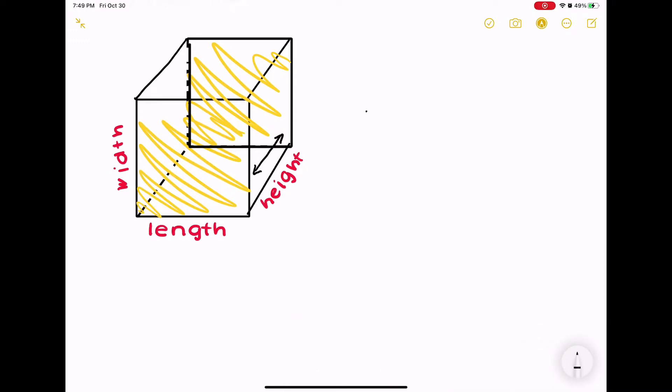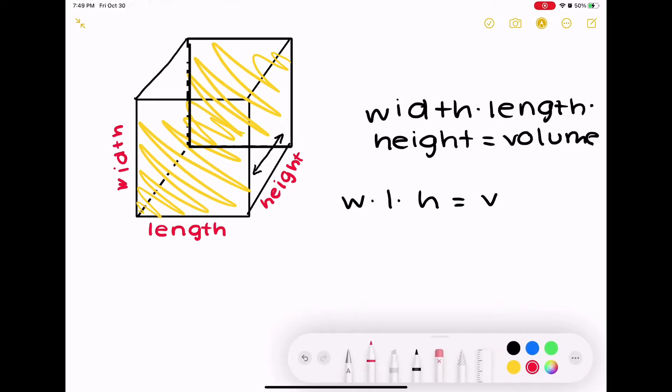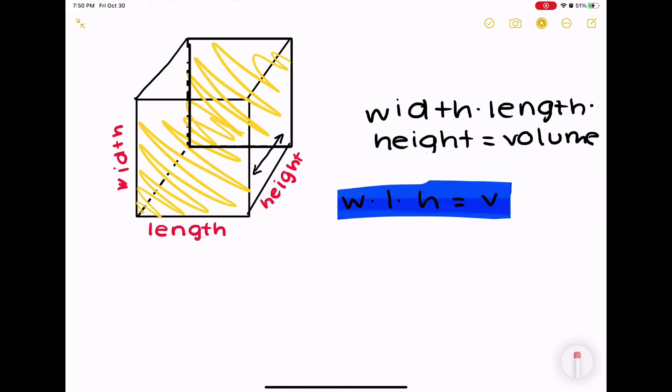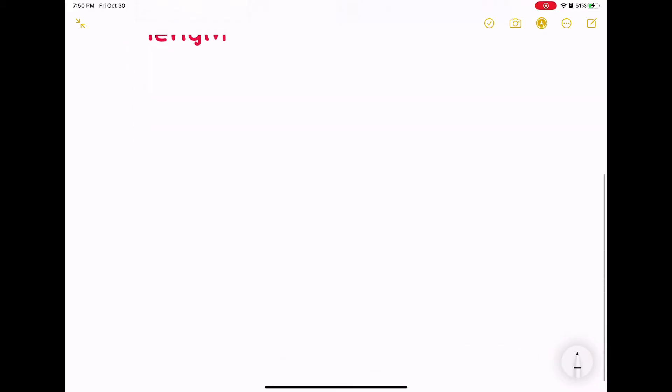In order to find the volume, you're going to be multiplying all those three numbers together. The equation is width times length times height. For short you can write W × L × H = V. Using this formula we can solve any volume equation.